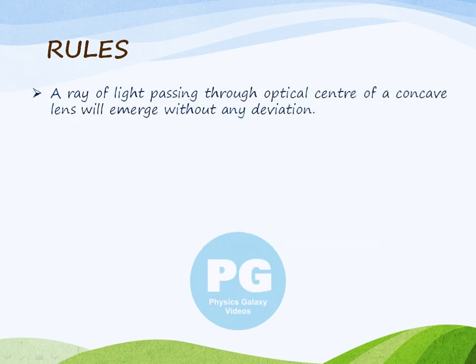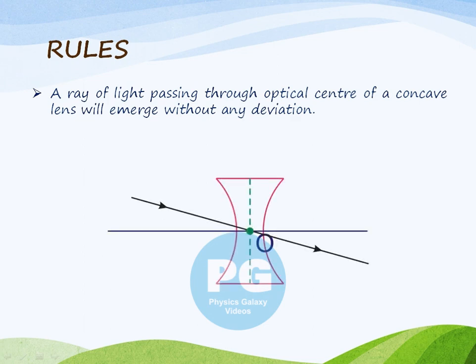A ray of light passing through the optical center of a concave lens will emerge without any deviation. This rule is quite similar to the rule of convex lens — a ray of light passing through the optical center of a convex lens will pass undeviated. Similarly, for the concave lens, a ray of light passing through the optical center will pass undeviated after refraction from the lens.